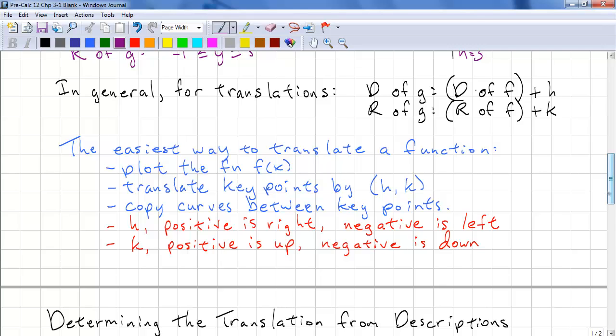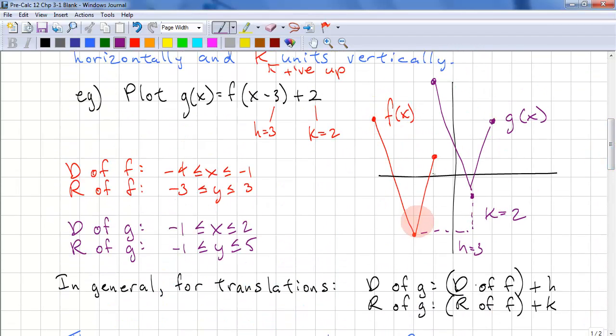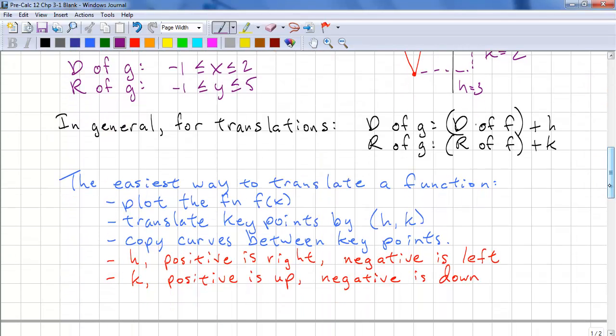Here's some general information for you. The easiest way to translate a function is plot the original function if it's not already plotted for you. Translate the key points by h and k. The key points were the end points and the corner.